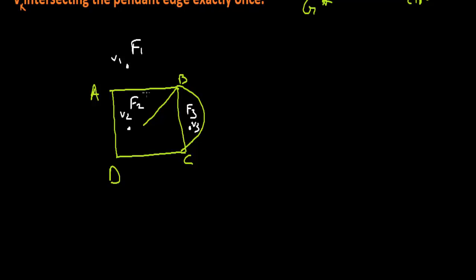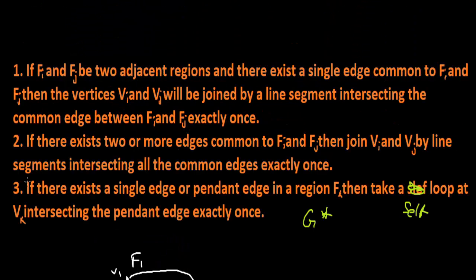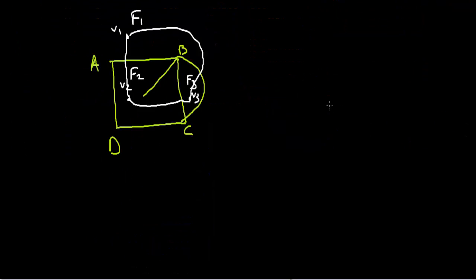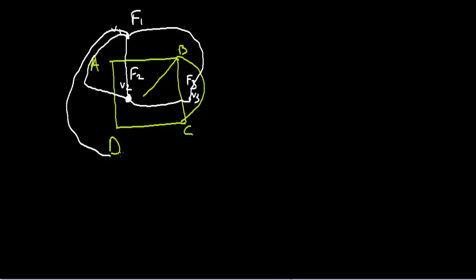First we need to join all adjacent regions and their corresponding vertices. We join v1 and v2, and we also join v1 and v3 since those regions are adjacent. We also see that there is another edge where regions are common and adjacent, so we can join them as well — but only once. So we join those vertices with parallel edges.